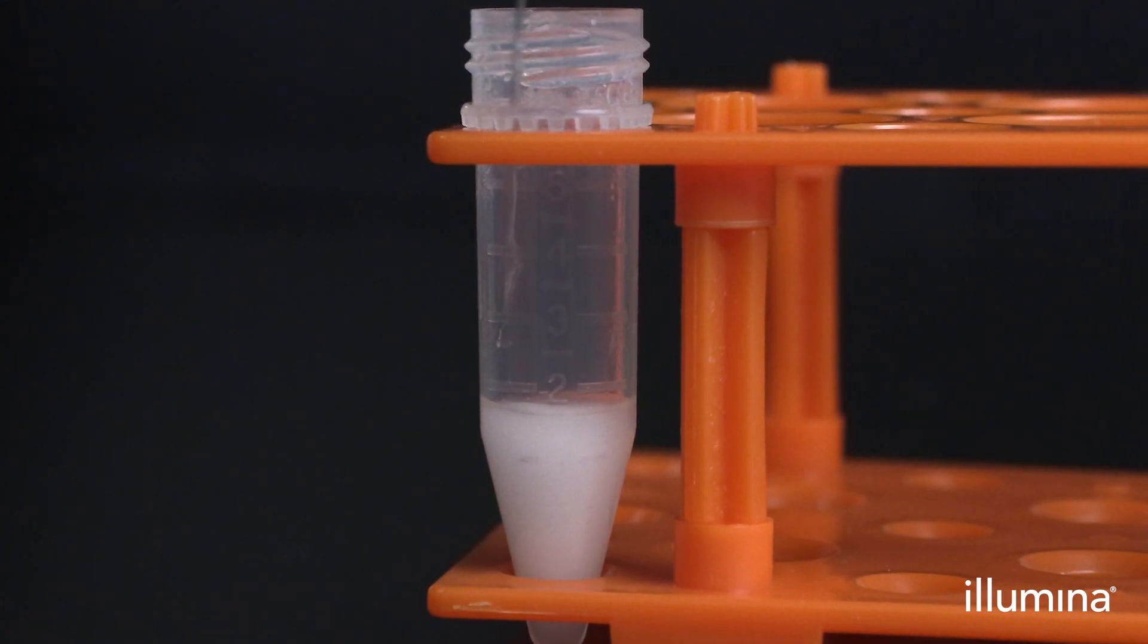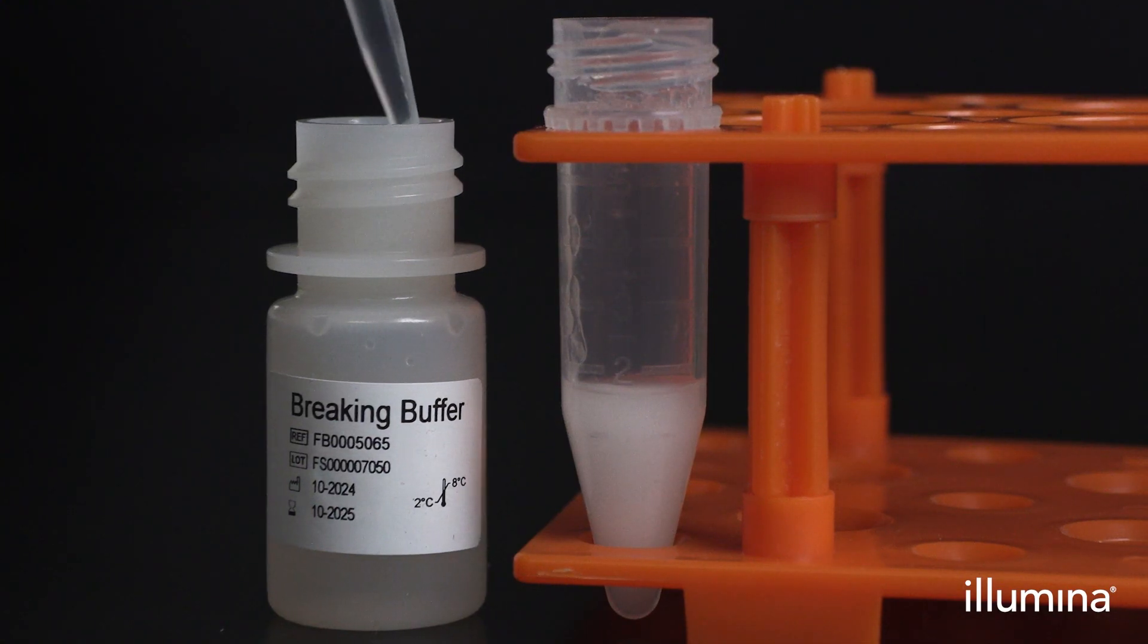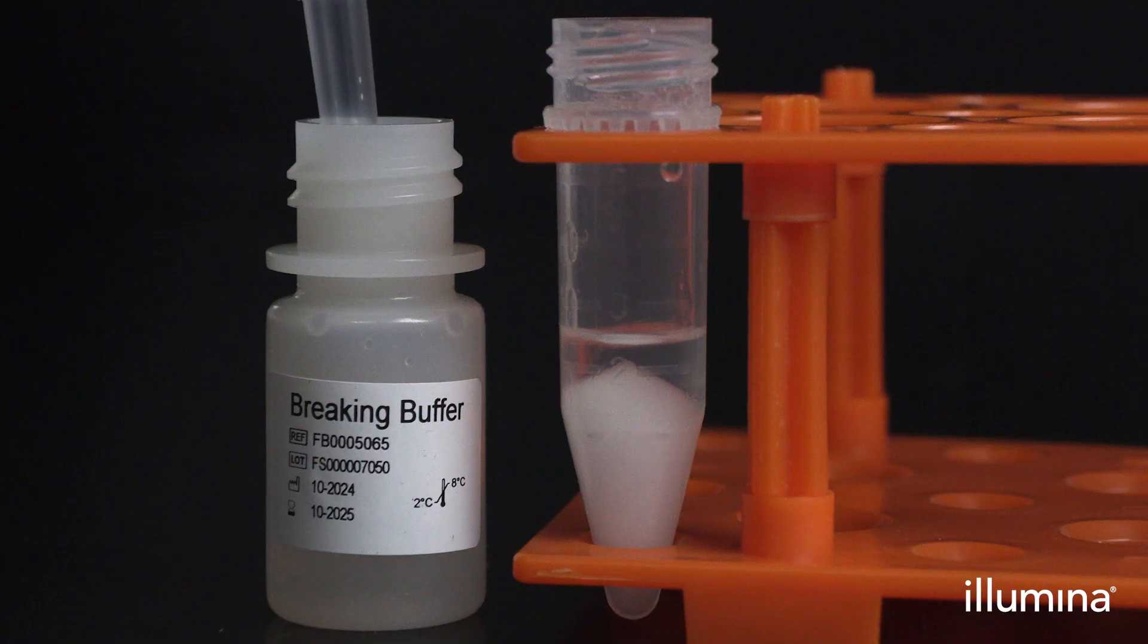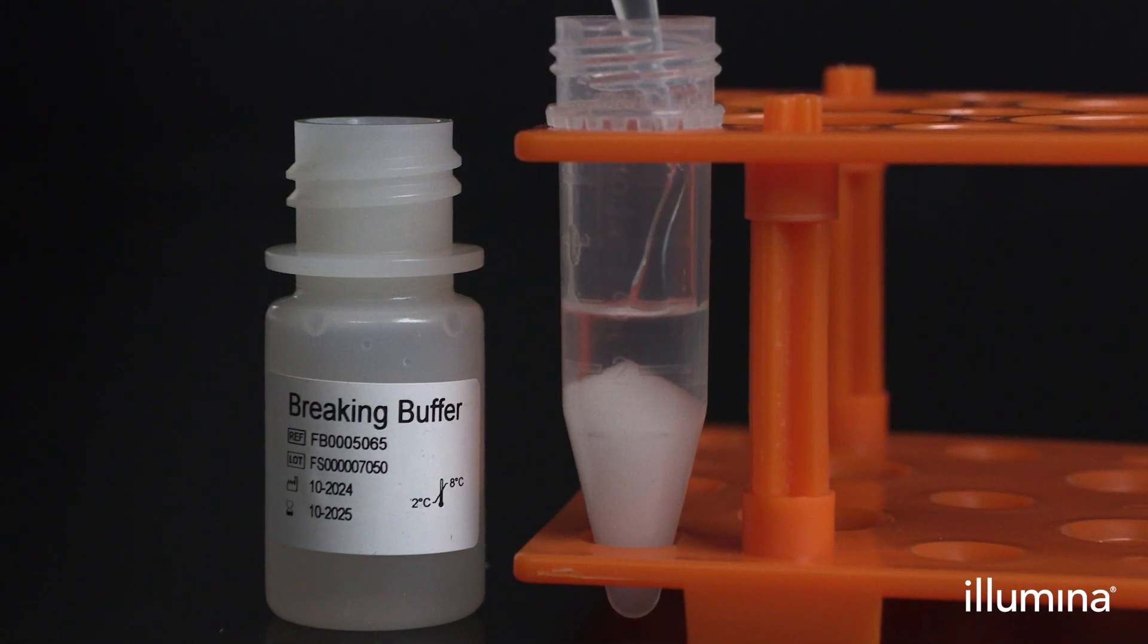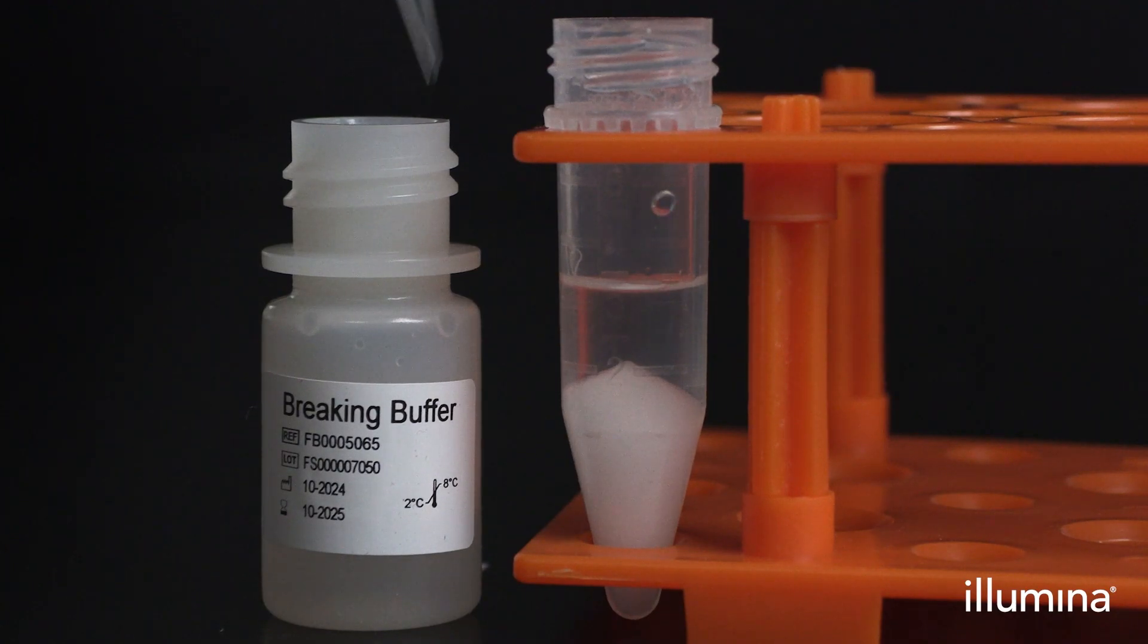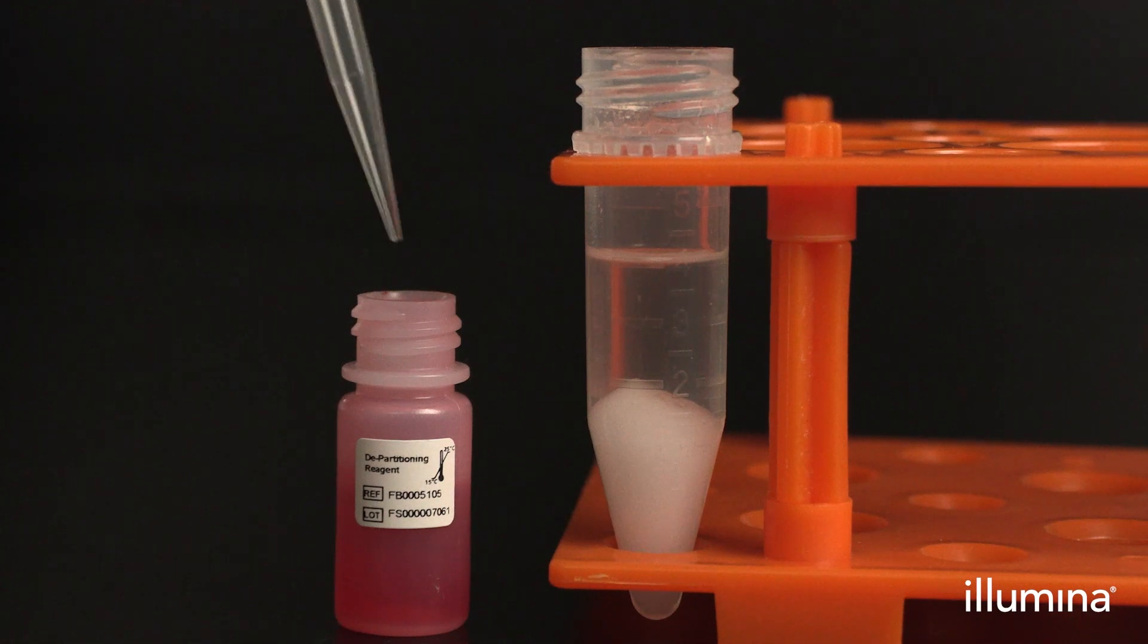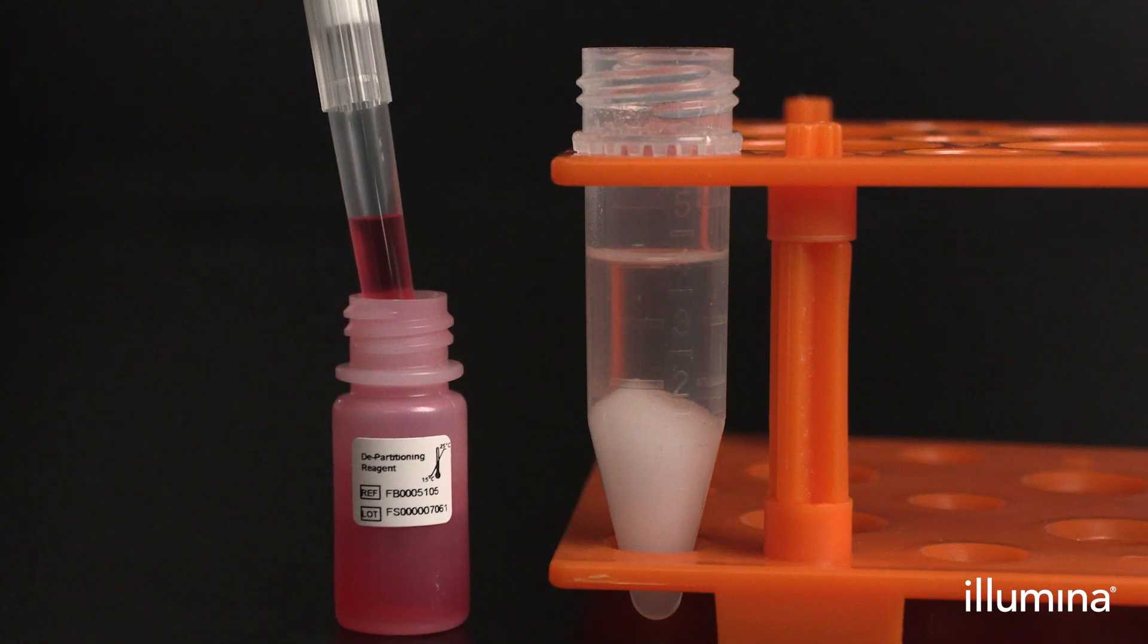Label the syringe and save it for the next pink waste removal step. Next, we will add 2500 microliters of breaking buffer down the sidewall. Next, we will add an addition of 800 microliters of the pink de-partitioning reagent added in the same fashion.